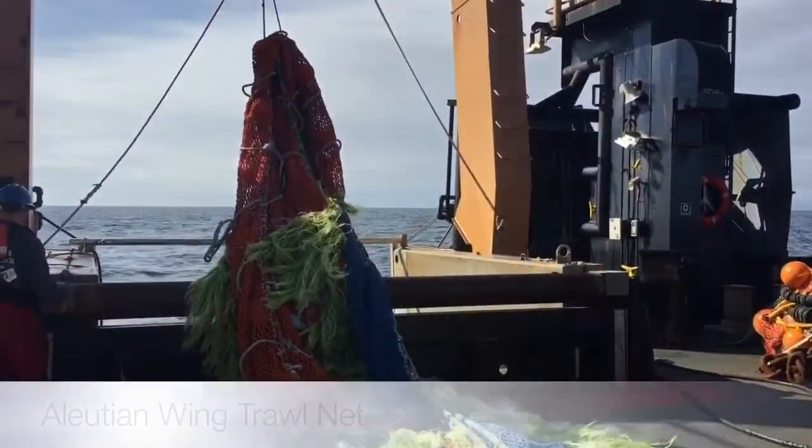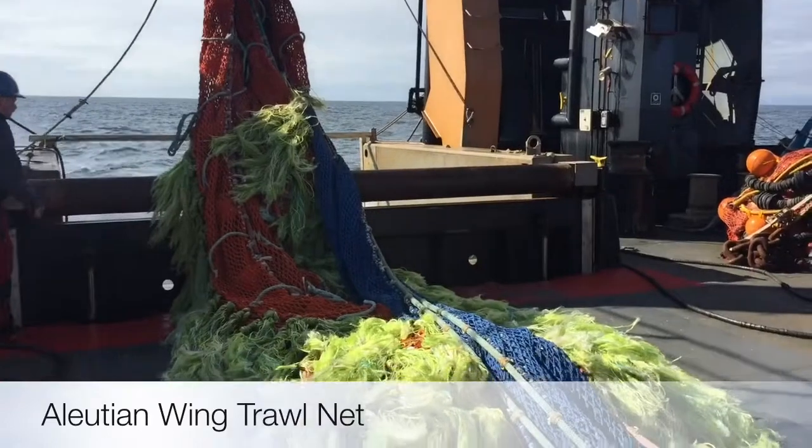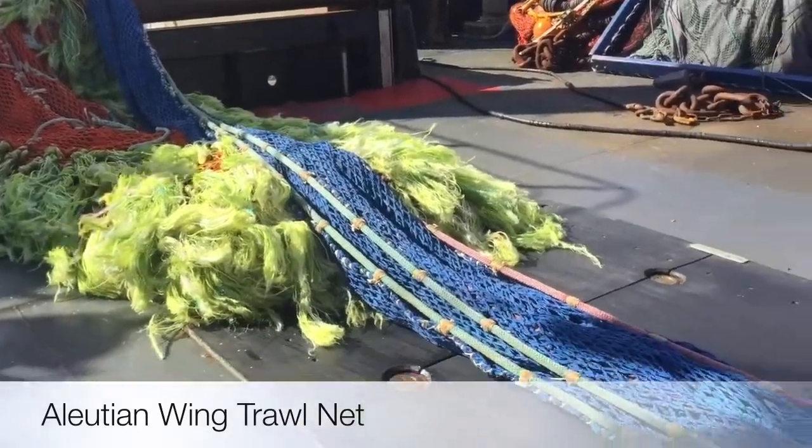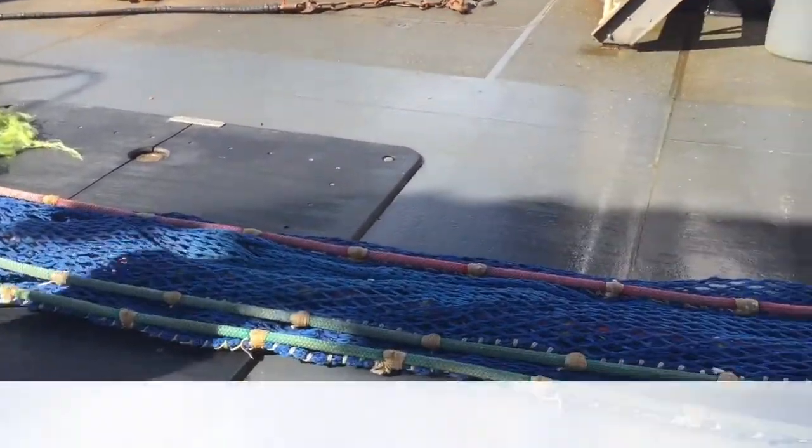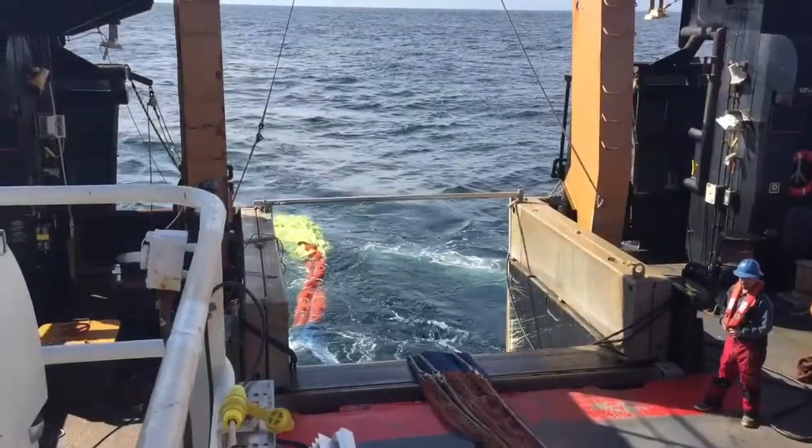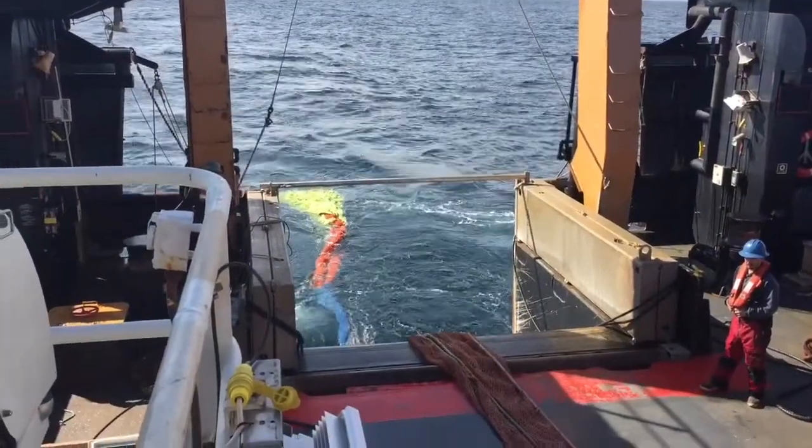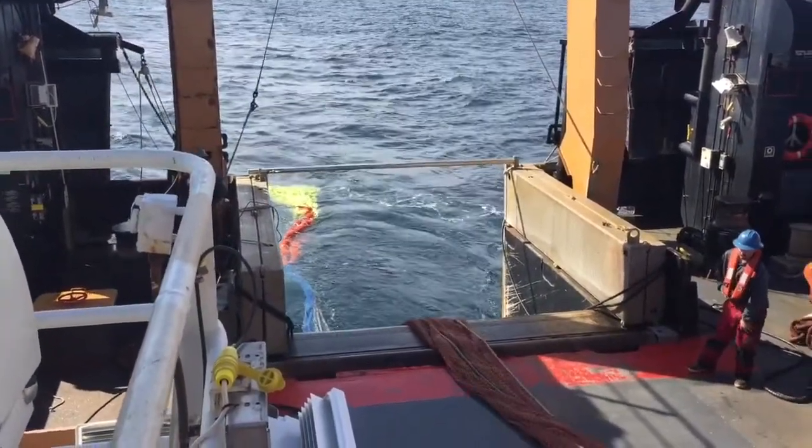The Aleutian wing trawl, or AWT, is a mid-water net designed specifically to catch pollock. When the net is in the water, it is 25 meters tall and 40 meters wide at its opening.